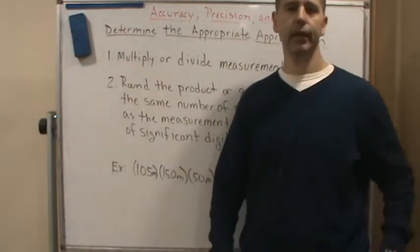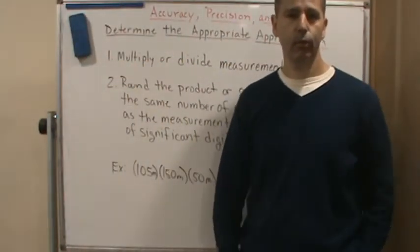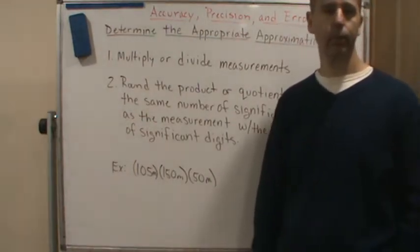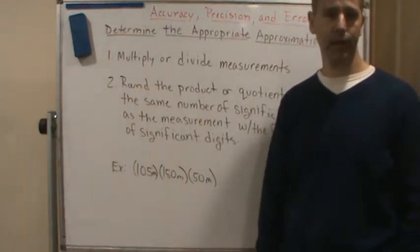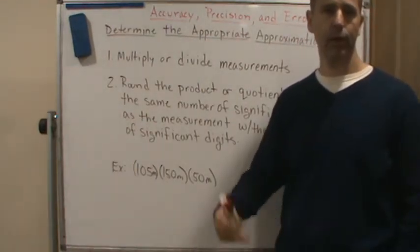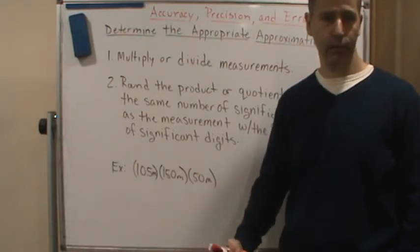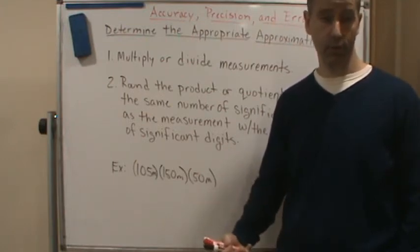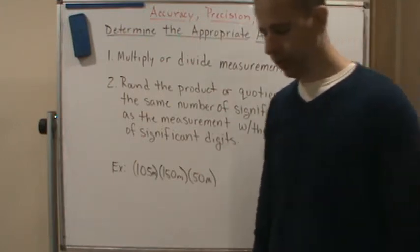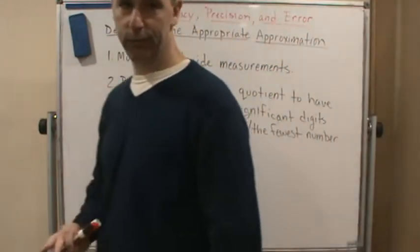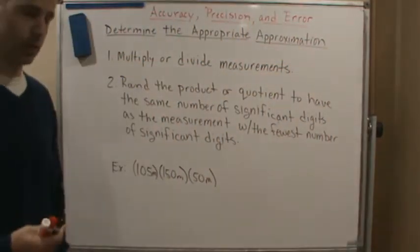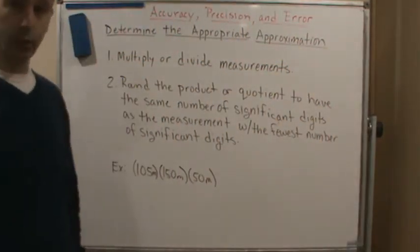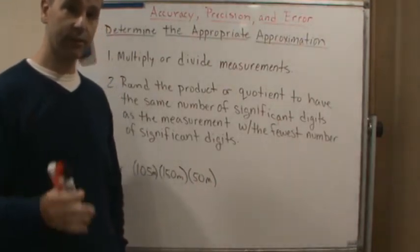Welcome back. Now we're going to talk about how to determine the appropriate approximation when we're multiplying or dividing — when we're trying to find a product or quotient of measurements. This is a little different than what we did with adding and subtracting; it deals with significant digits instead of precision.